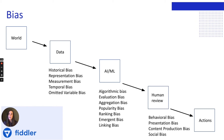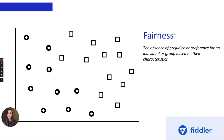Addressing bias is important when trying to create fair machine learning, but let's examine what we mean when we say the word 'fair.' There is no universally agreed upon definition of fairness. Very broadly, we can define fairness as the absence of prejudice or preference for an individual or group based on their characteristics. Let's look at two common notions of fairness: individual versus group fairness.